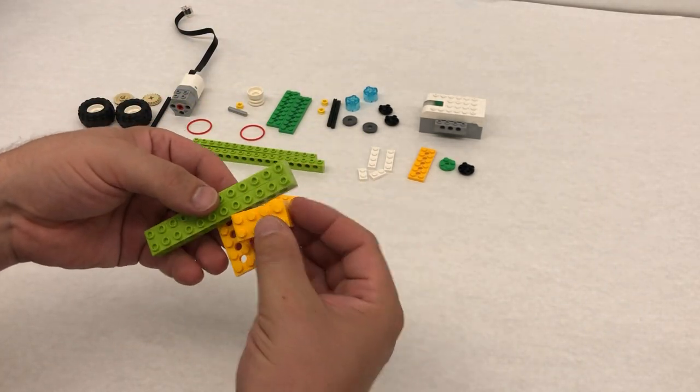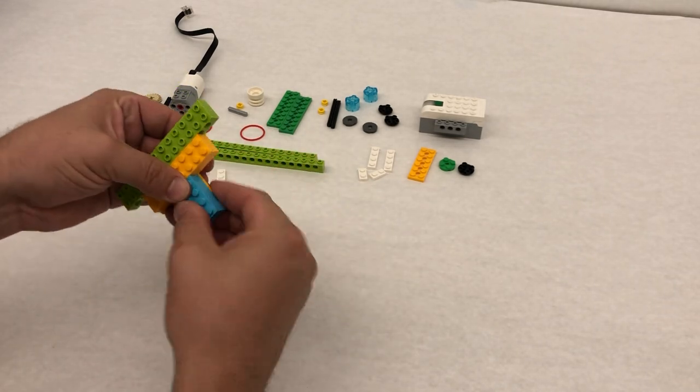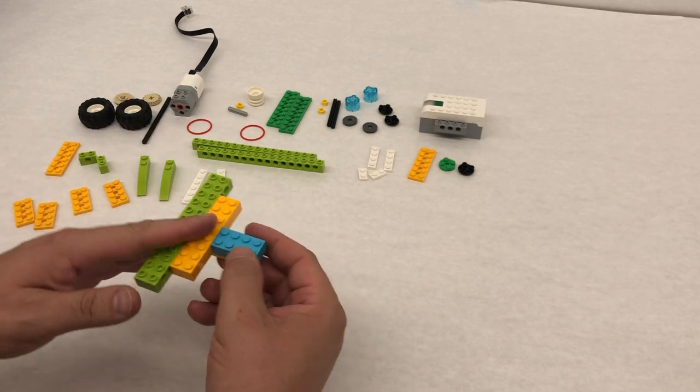We're gonna take our 2x4 bricks and we're gonna go on either side and then we're gonna put this blue one right down the middle. This is kind of the base that things are gonna sit on.